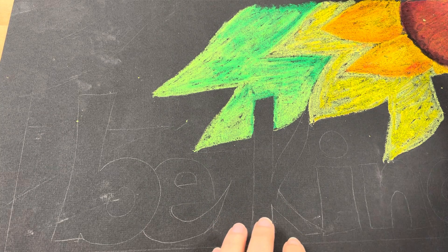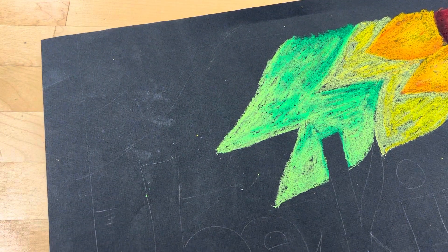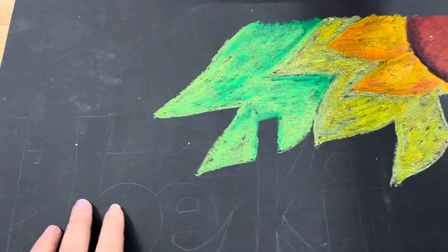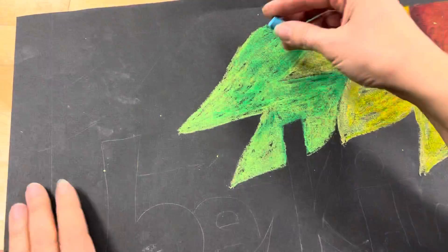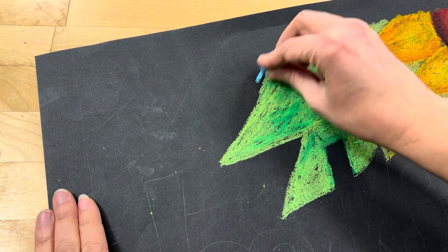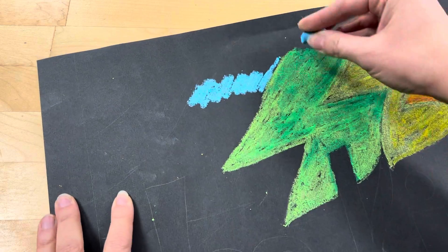So oil pastels work a lot like crayons, but there's so much more that you can do with them. So I'm going to be working in this area here. I'm kind of using a rainbow color palette. So the next color that I'm going to use is a blue. And the first thing that I do is I just go ahead and get some product on, get some material down.